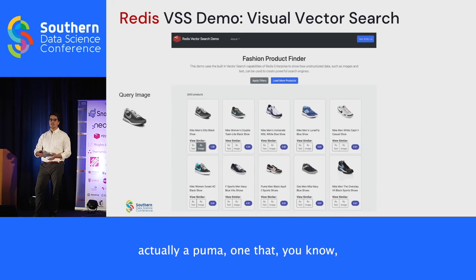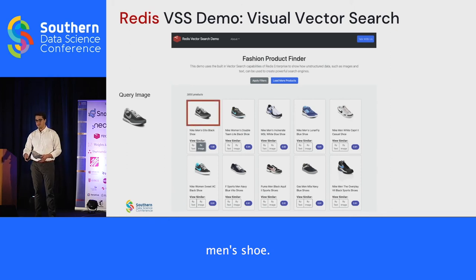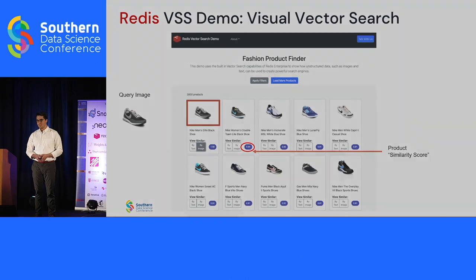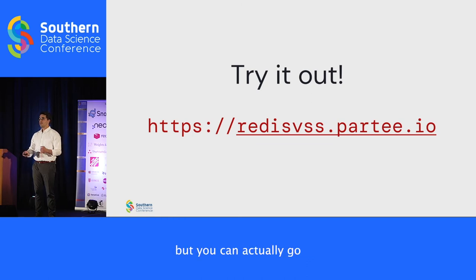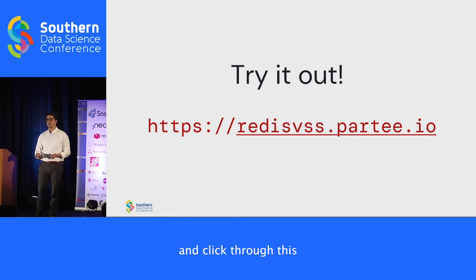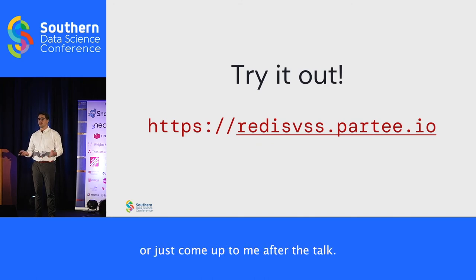You can apply filters and see how these work together. These results aren't all Nikes — there's actually a Puma one that the ResNet-18 variant matched to this Nike men's shoe. This is the link — you can actually go and try this out today. It's hosted, though not optimized for mobile, so try it on a computer. All the code is on GitHub in the Redis Ventures GitHub, or just come up to me after the talk.